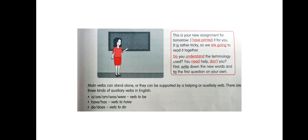Similarly, whenever you pick out an auxiliary verb, the most important thing you have to see is whether the subject is plural or singular. Now, this is your new assignment for tomorrow. I have printed it for you. It is rather tricky, so we are going to read it together. First, write down the new words and try the first question on your own.